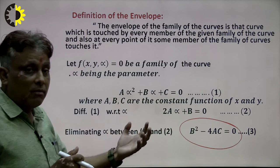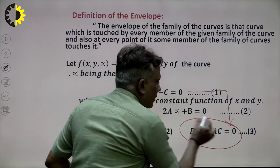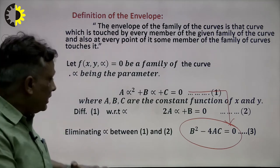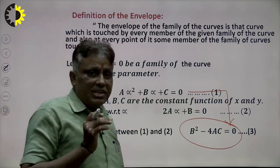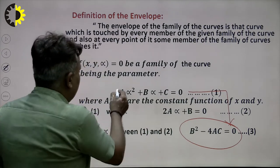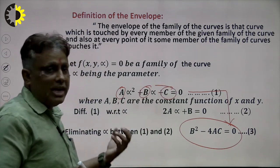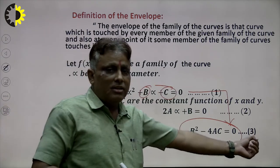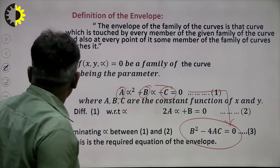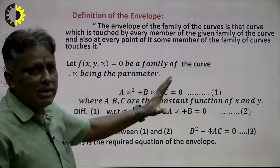When we calculate the envelope of the curve, the result will be in the form b² − 4ac = 0. Without any lengthy calculation, we can directly calculate the envelope of the curve by identifying a, b, and c, and putting their values in b² − 4ac = 0. This gives us the envelope of the given curve. This is our first method, and it applies when the curve is in quadratic form.